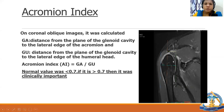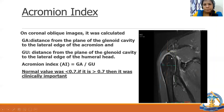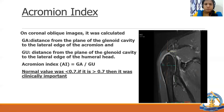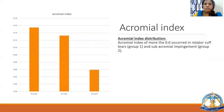The acromial index was also calculated on coronal oblique image. A line is drawn parallel to the lateral aspect of the humerus and another along the lateral aspect of the glenoid. GA is the distance from the plane of the glenoid cavity to the lateral edge of the acromion, and GU is the distance from the glenoid cavity to the lateral edge of the humeral head. Acromial index is the ratio of GA to GU. Normal value is less than 0.7; greater than 0.7 is clinically important. An acromial index of more than 0.6 occurred in rotator cuff tears and subacromial impingement.